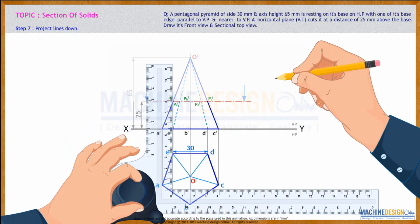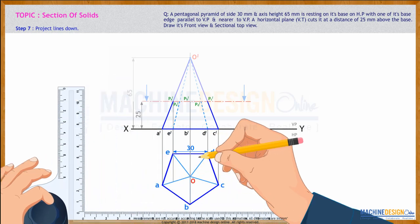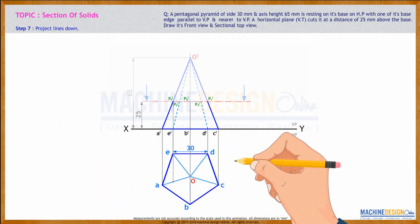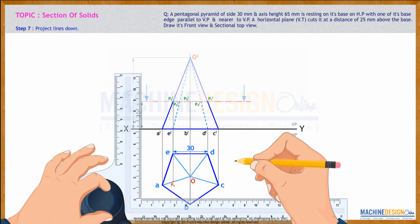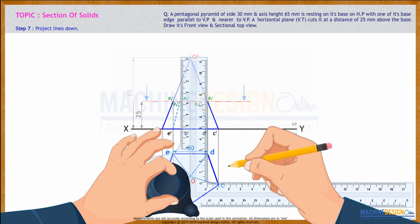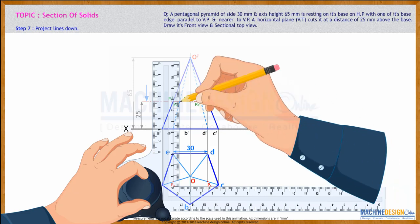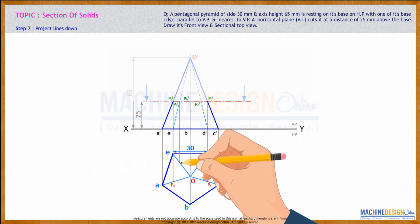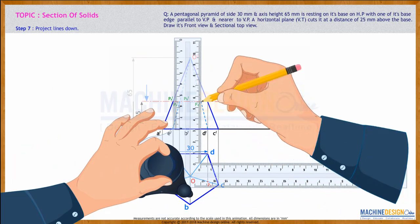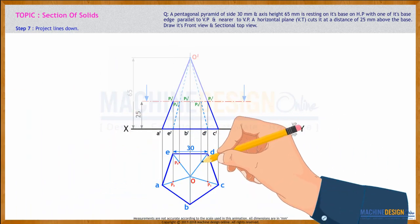Now project PA' from here vertically to cut on OA, that will be point PA. PC' from here vertically to cut on OC, that is point PC. PE' from here vertically to cut, that is point PE. PD' vertically to cut on OD, that is point PD.